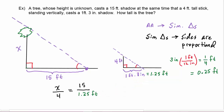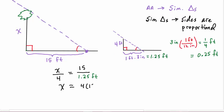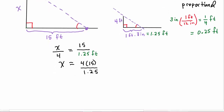To solve the proportion, since x is already in the numerator, we cross-multiply: x equals 4 times 15 divided by 1.25. Doing that calculation, x equals 48. Since all measurements were in feet — 4 feet and 15 feet — the units of our answer are feet. So the tree is 48 feet tall.